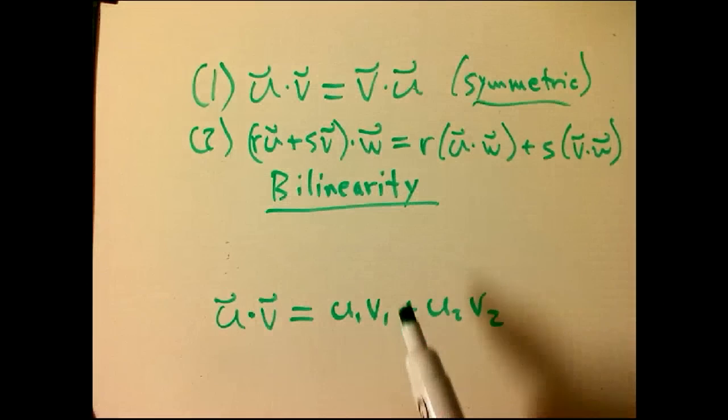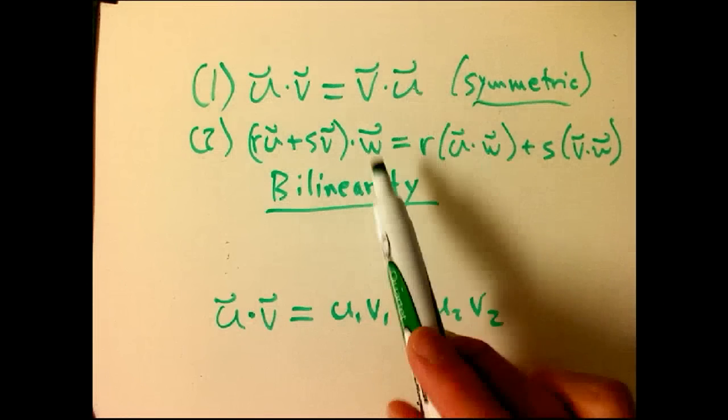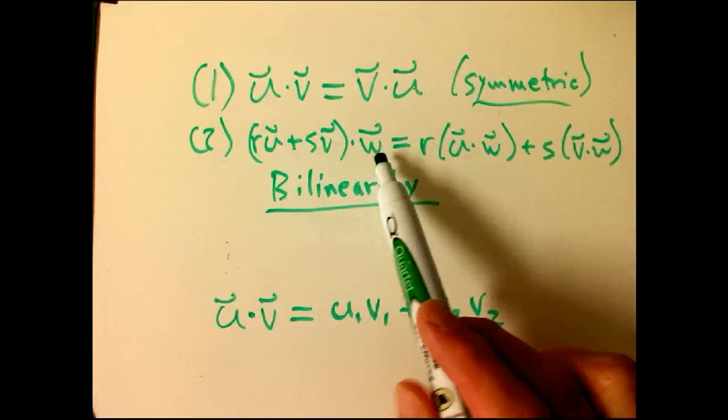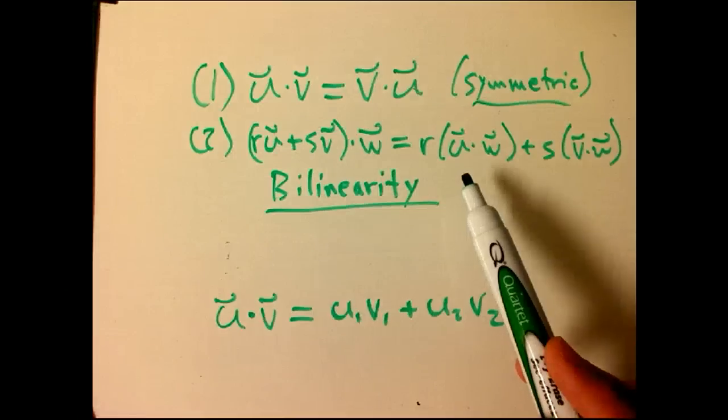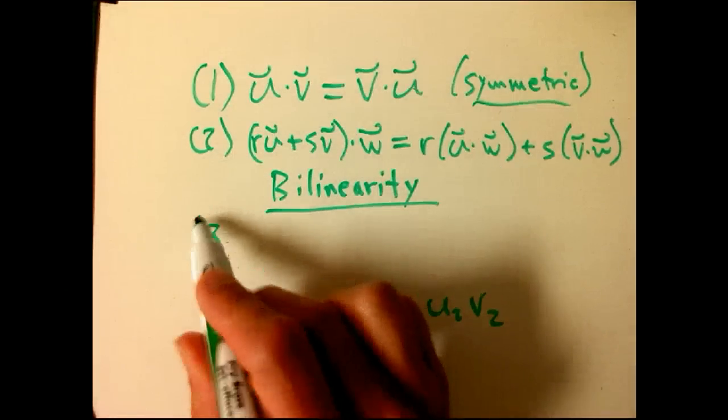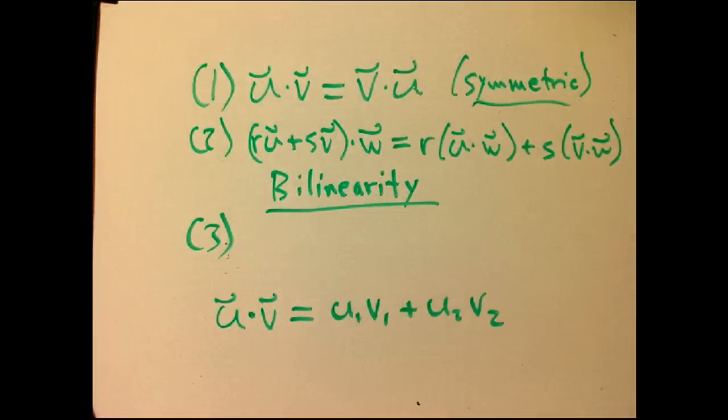It's called bilinearity because if you combine that with symmetry, you could also make this into a sum with coefficients, and so it's linear both in the left argument and the right argument, that's a super huge important fact.